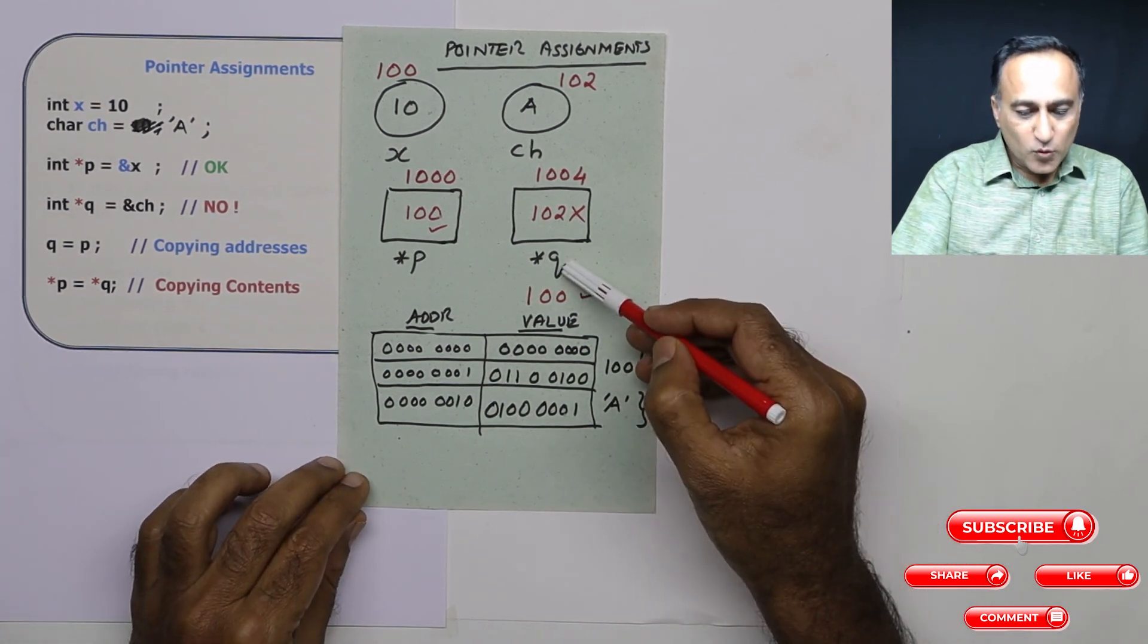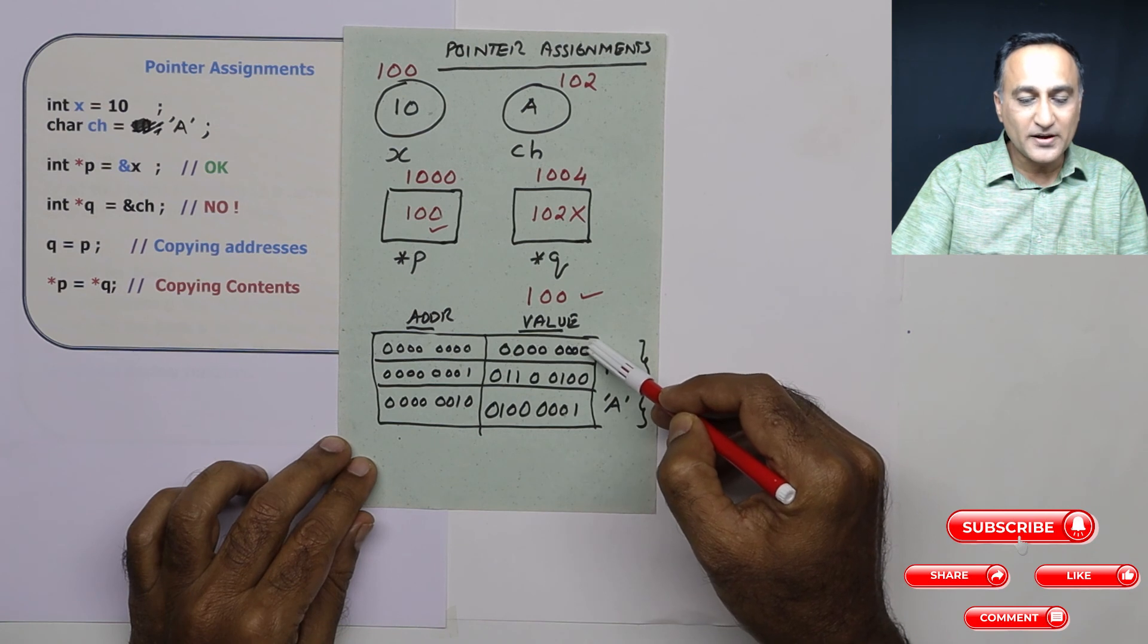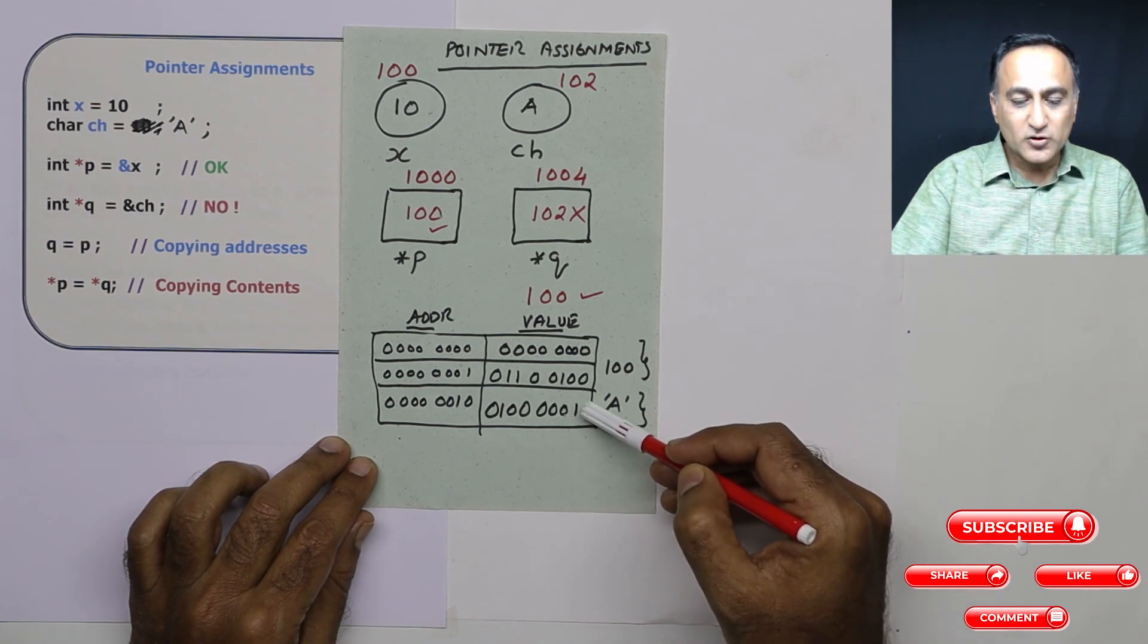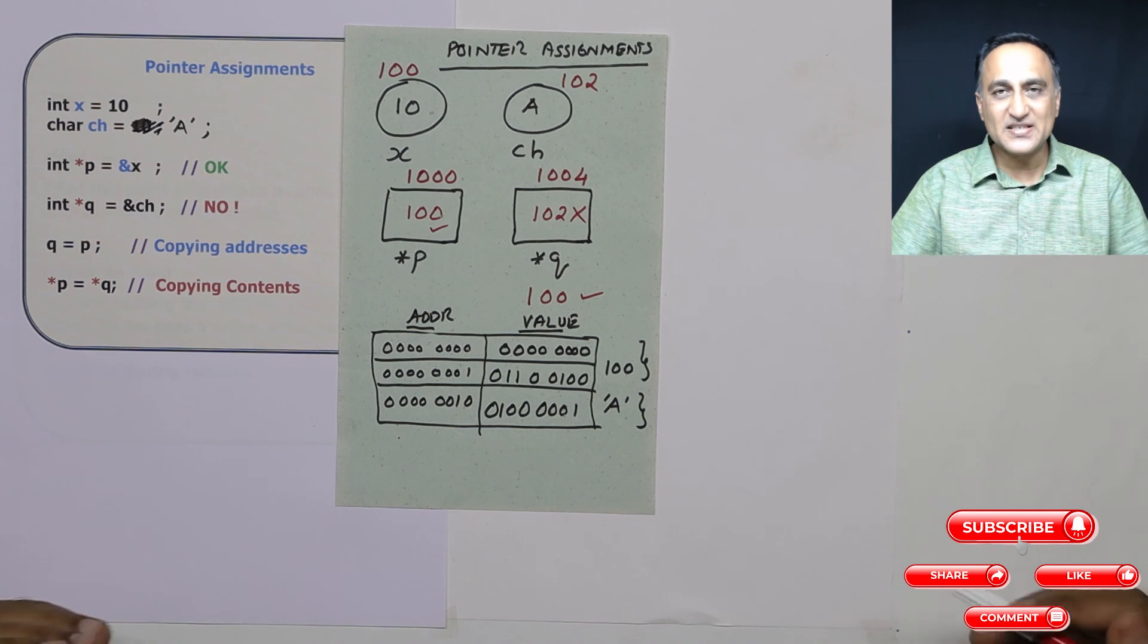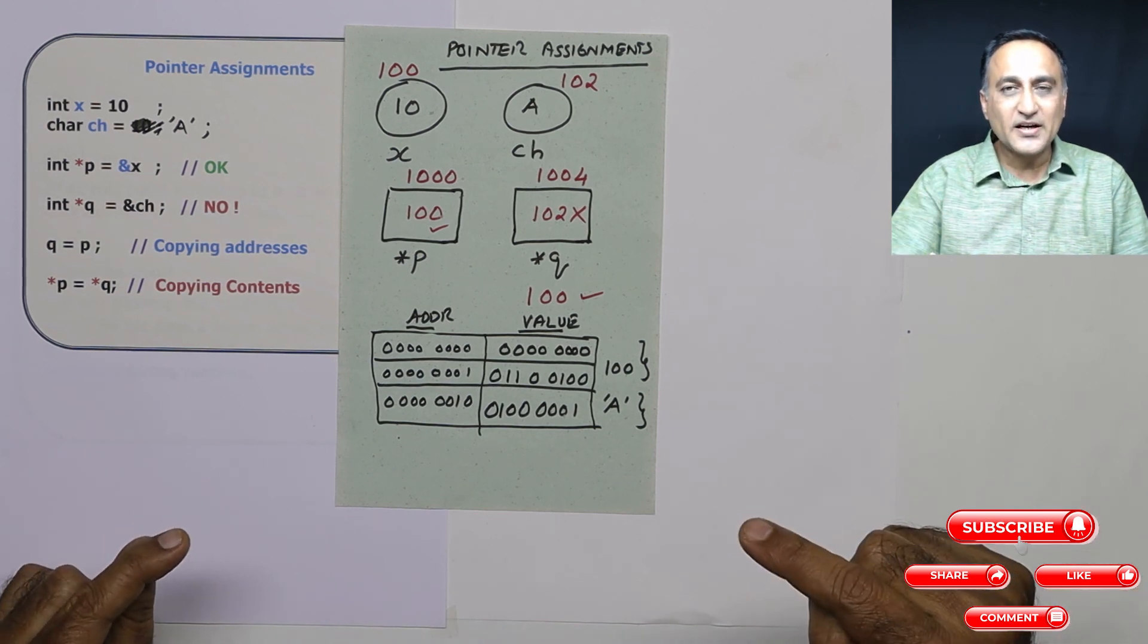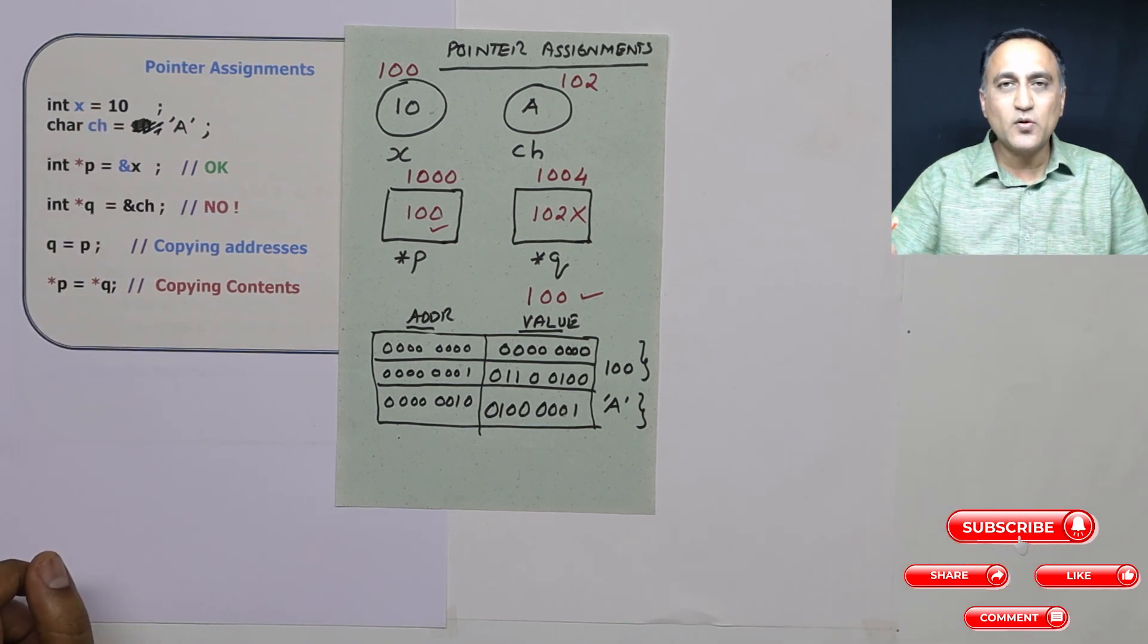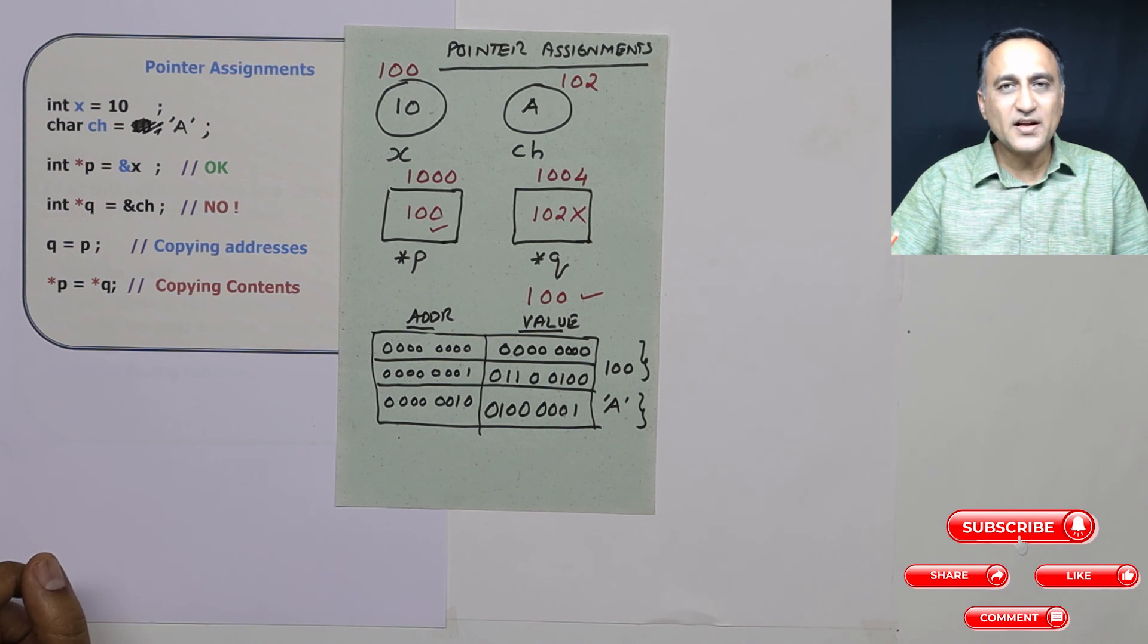Now if q is referring to the address of an integer, when I say star q it knows that integer is of two bytes, it will work perfectly. But if I take q and assign it to the address of character, it will not work correctly because it will also think that character is of two bytes whereas character is of only one byte. Since every data type has different sizes, you cannot assign the pointer variable of one data type to the address of another data type because when you use the star operator, it needs to know the data type it is pointing to. So an integer pointer can only contain the address of an integer variable. A character pointer can only hold the address of a character variable. This way when you use the star operator it will correctly go to the memory and choose whether it has to read one byte, two bytes, or three bytes or four bytes and so on.